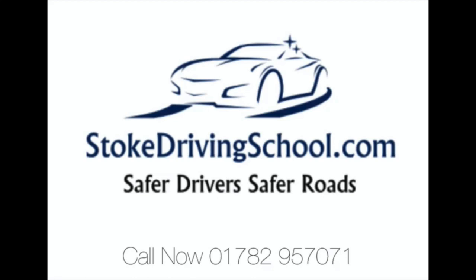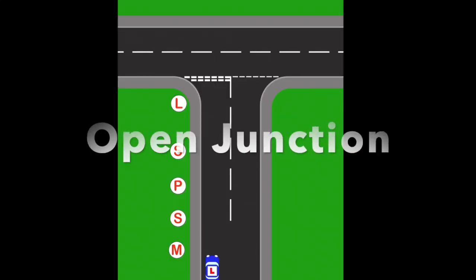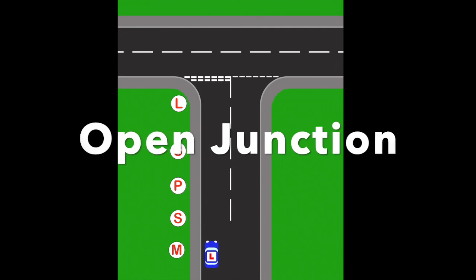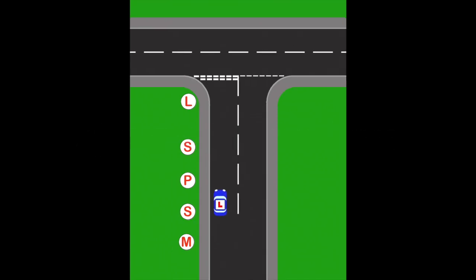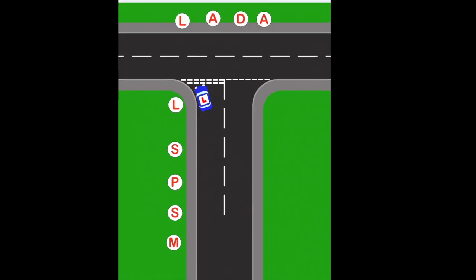So here today we're going to look at open and closed junctions. Here's an example of an open junction on some of the modern estates. If you look at the top of the road, it actually curves round, which gives you much better observation of the road that you're emerging onto. So we look, assess, decide, and act, and pull out when ready.